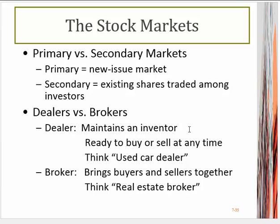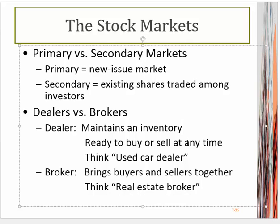What about the marketplace? There are two kinds of markets. The primary market is where companies issue stock for the very first time — it's a new issue market. Once the stock has been issued, the secondary market takes place, where individuals are trading shares with other individuals. The important distinction is that in the primary market, that's the only time a corporation will ever get money from its investors. We also have dealer markets and broker markets.